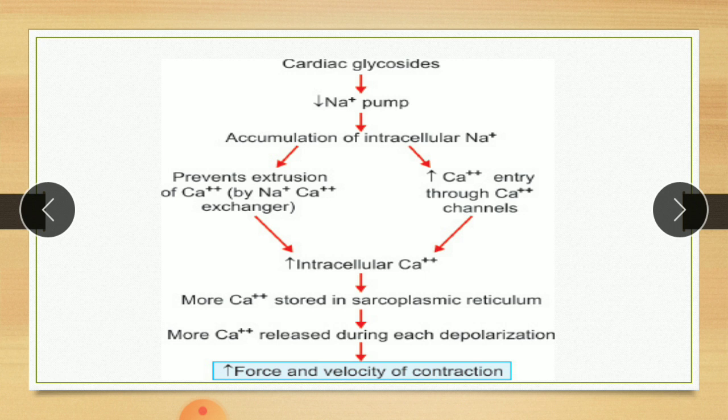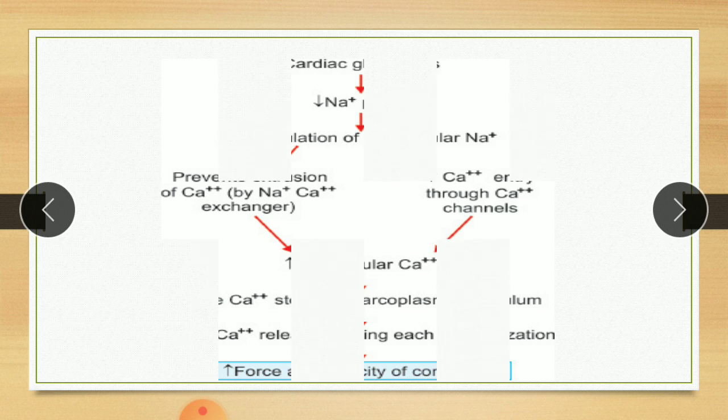So it is the mechanism of action of cardiac glycoside. It simply inhibits the sodium-potassium ATPase pump, which increases intracellular sodium concentration, which increases intracellular calcium concentration, and which leads to forceful contraction.